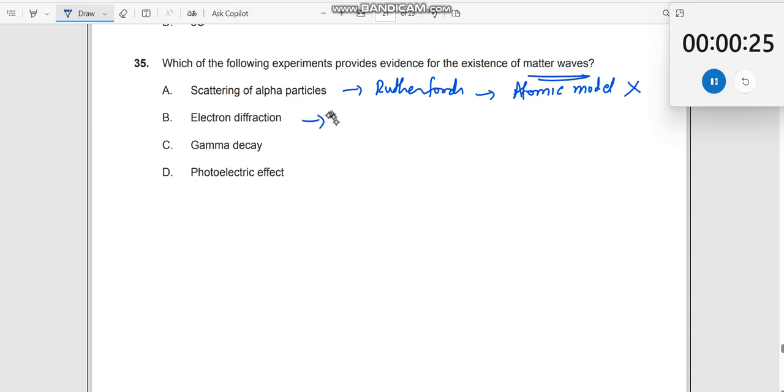Electron diffraction. What do we do? We give electrons but instead we get a diffraction pattern, which means you have a particle, it becomes a wave. So this is the one which tells you about the matter waves. So B is the right answer.